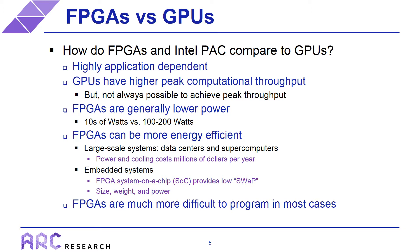FPGAs tend to be lower power than GPUs, at least in the high-end realm. High-end FPGAs consume on the order of tens of watts, whereas high-end GPUs consume 100 to 200 watts — basically an order of magnitude lower power consumption. This gives FPGAs significant advantages in terms of energy efficiency. They're not always more energy efficient, but that is often why they are chosen. This is important in large-scale systems like data centers or supercomputers, which have enormous power and cooling costs on the order of millions of dollars per year. If you can reduce that energy considerably, you make it much more practical to run those types of systems.